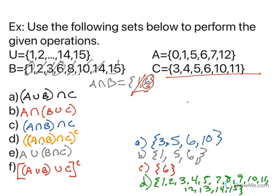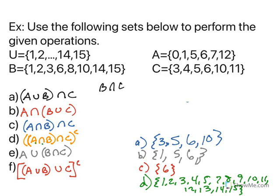All right, let's look at letter e. Letter e is a or (b and c). So we have to start by finding b and c. What do they share? Well, let's go with b. Do they have a 1? Nope. Nope. 3? Yes. Okay. 6? Yes.